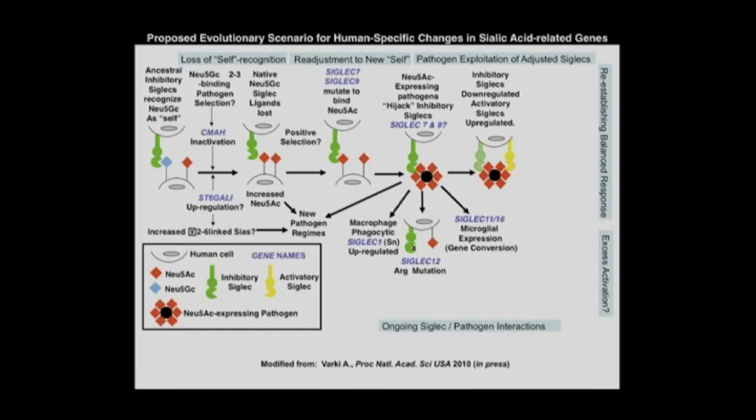Siglecs 11 and 16 are particularly interesting because they're only found in the human brain, in the microglia — not in the chimpanzee brain. So what we think happened is the inhibitory siglecs were down-regulated, and the activatory siglecs were up-regulated in response to this process.